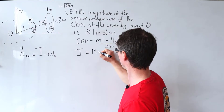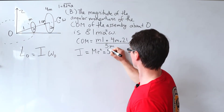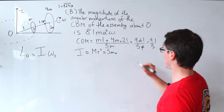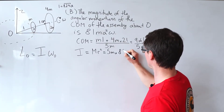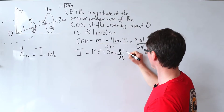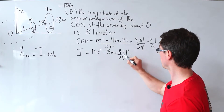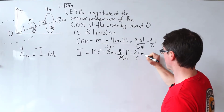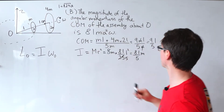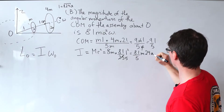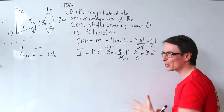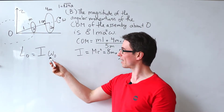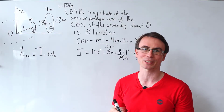Substituting l = √24·a, we get I = (81/5)m · 24a². This is starting to look suspiciously like the given answer — part of the reason this question is so difficult. But we still haven't multiplied by the angular velocity with respect to the origin.